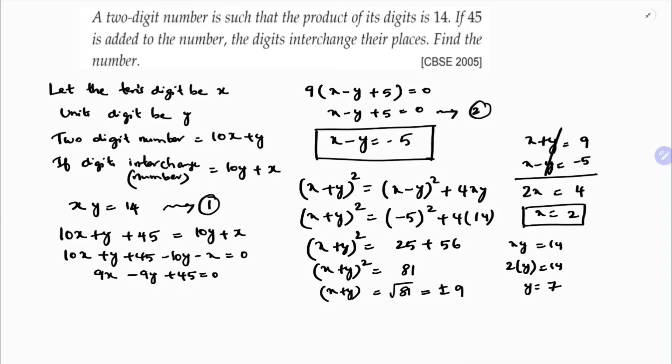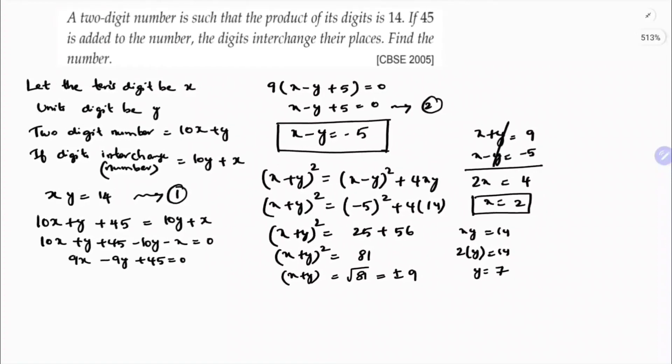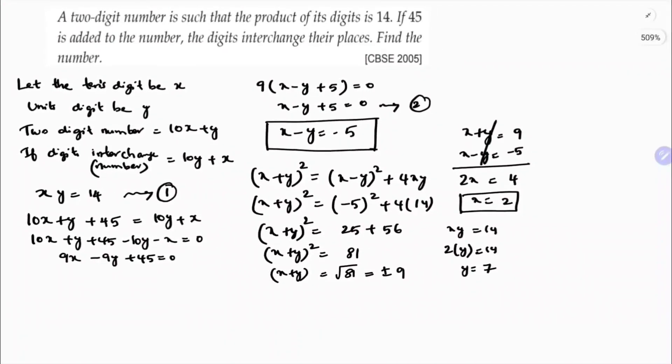So the number will be 10x plus y, 10 into 2 plus 7, which is 27. So the number is 27.